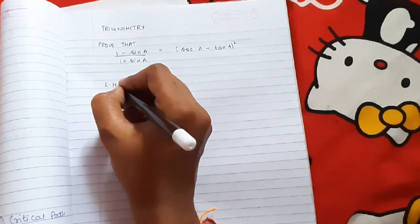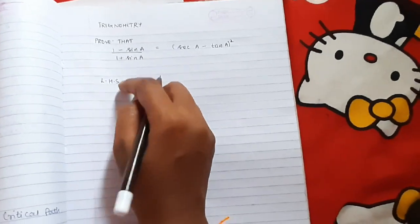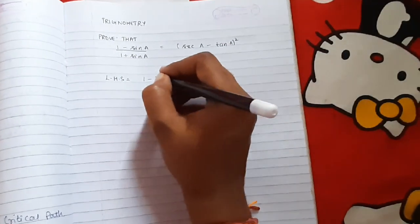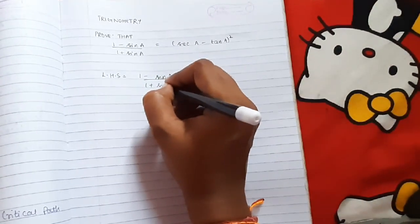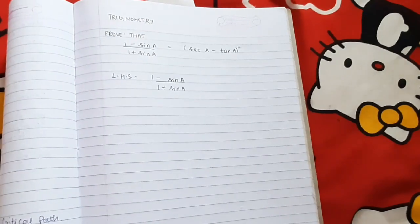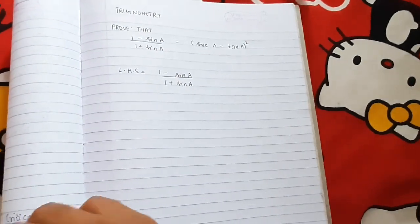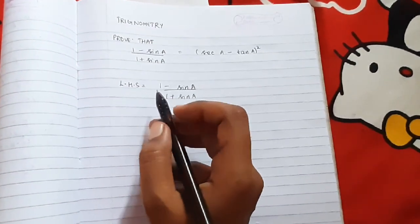So we are solving this from the point of view from LHS, that is (1 - sin A) / (1 + sin A). Now we are going to solve it.